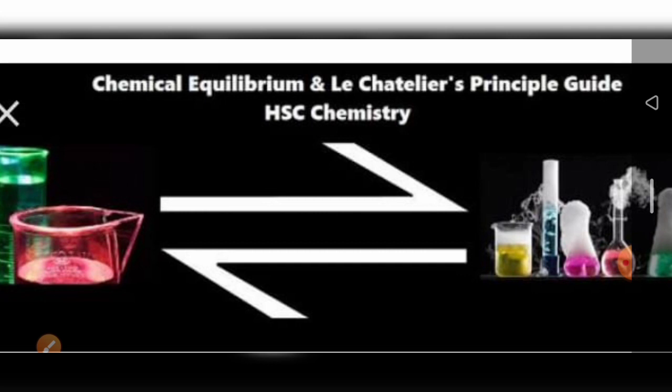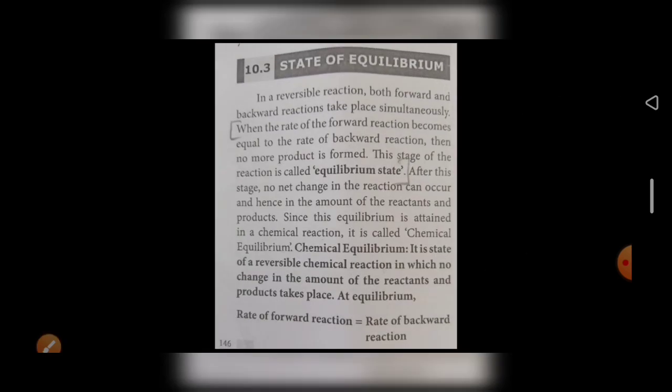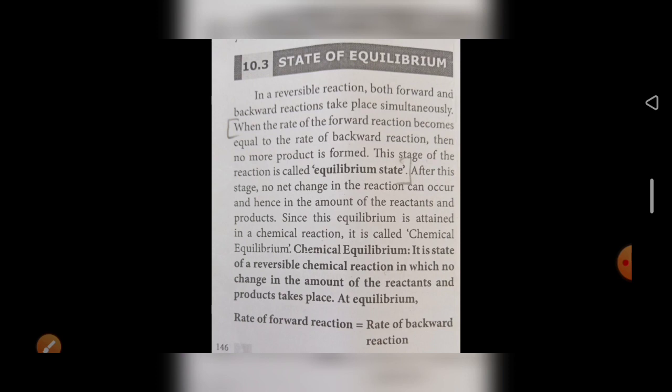The equilibrium constant symbol is used for reversible reactions. The same symbol will be written for these reactions also. In a reversible reaction, both forward and the backward reactions take place simultaneously — that is known as equilibrium.